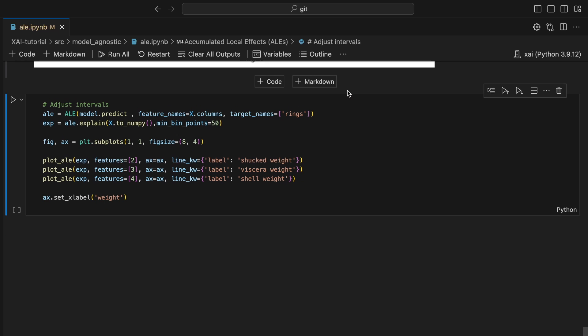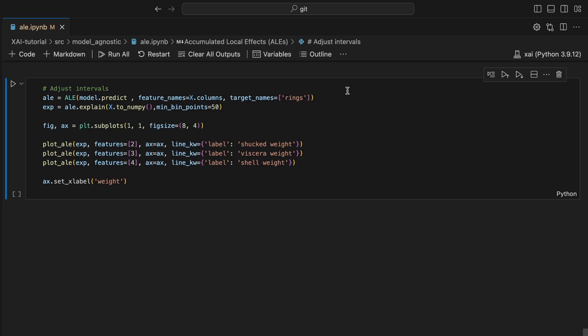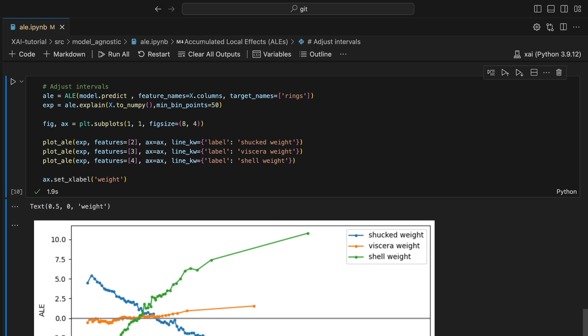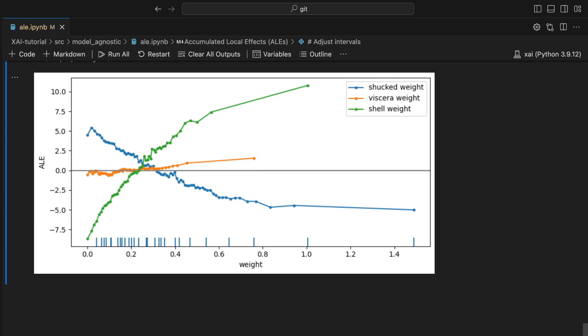In this code, we create the same chart with one key difference. We have changed the minimum number of instances in an interval to 50. We do this using the minBinPoints parameter. You can see the result is a smoother ALE with larger intervals.